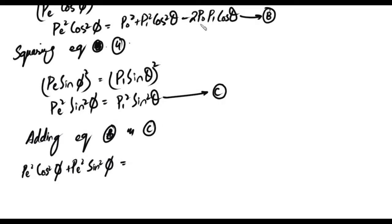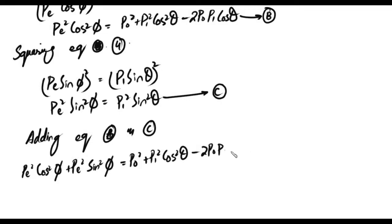On the right side, when we add equation B and C, we get: P₁² cos²θ minus 2P₀P₁ cos θ, and then we add P₁² sin²θ from the other equation.